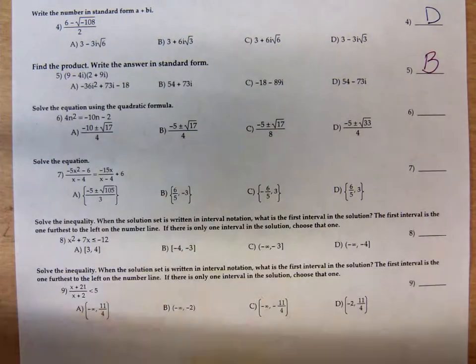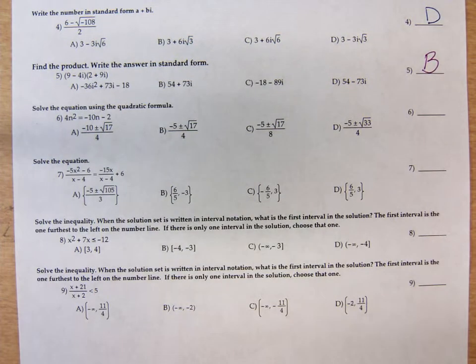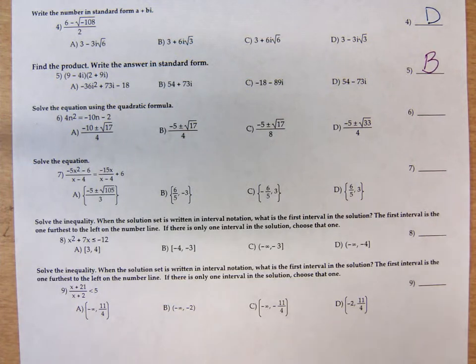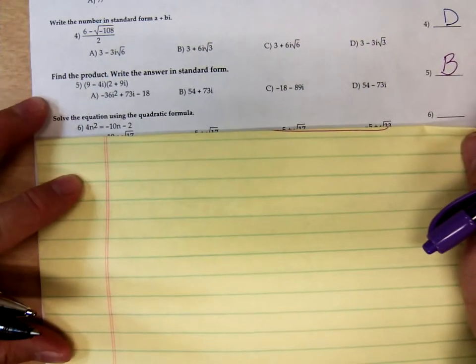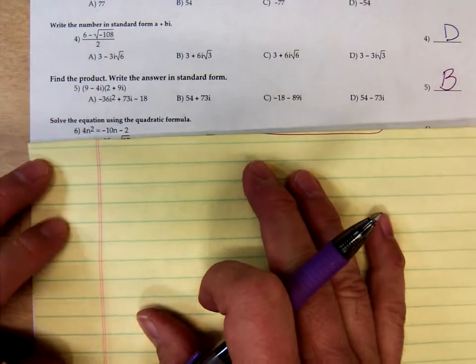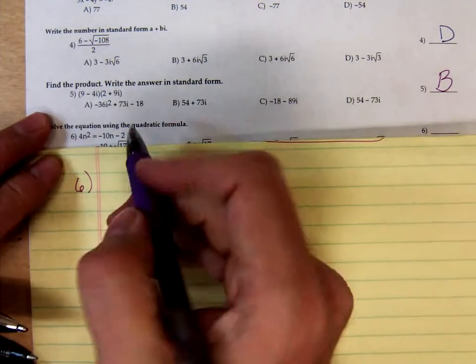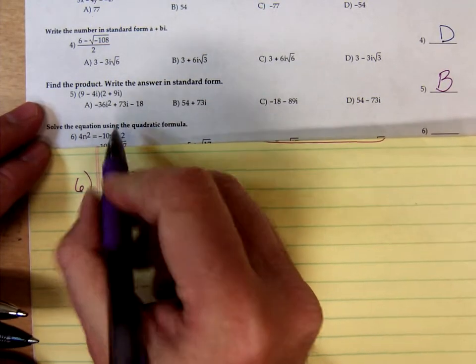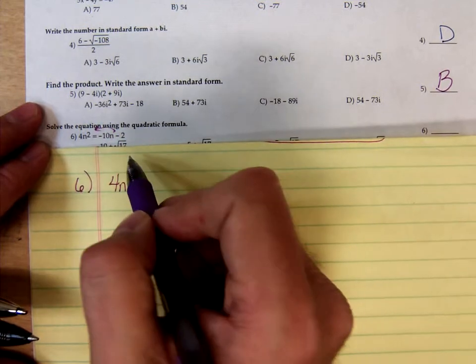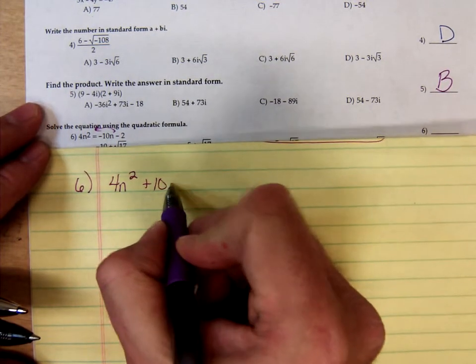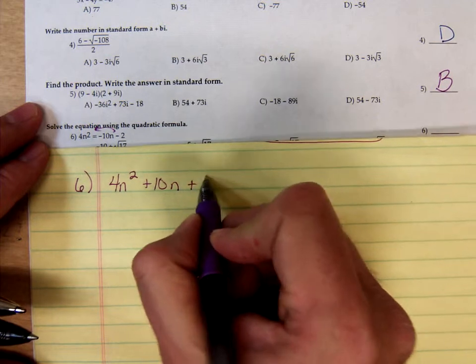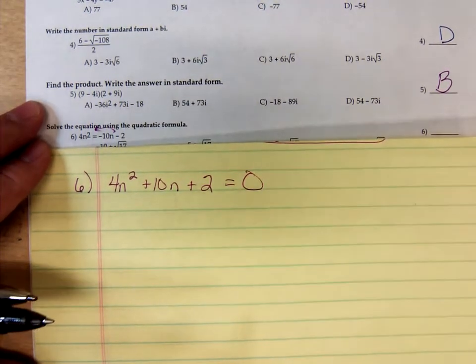Now problem number six. Solve this equation using the quadratic formula. In order to use the quadratic formula, we've got to have it in that standard form with a 0 on one side. What I'm going to do is move the 10n and the 2 over. So I'm adding 10n and adding 2 to get a 0.